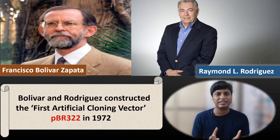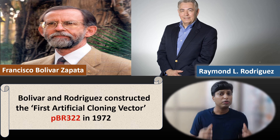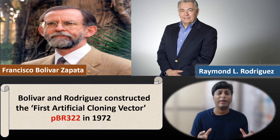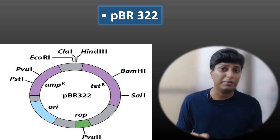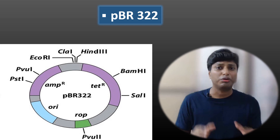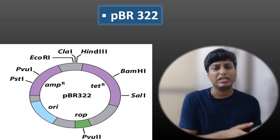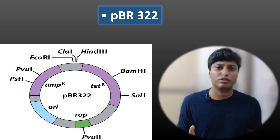Back in the year 1972, two great scientists — Francisco Bolivar Zapata and Raymond L. Rodriguez — made the first artificial cloning vector. This artificial cloning vector was termed as PBR322. PBR322 was used very commonly by Bolivar and Rodriguez to transfer a foreign gene inside a bacteria like E. coli and form many many copies of that foreign gene.